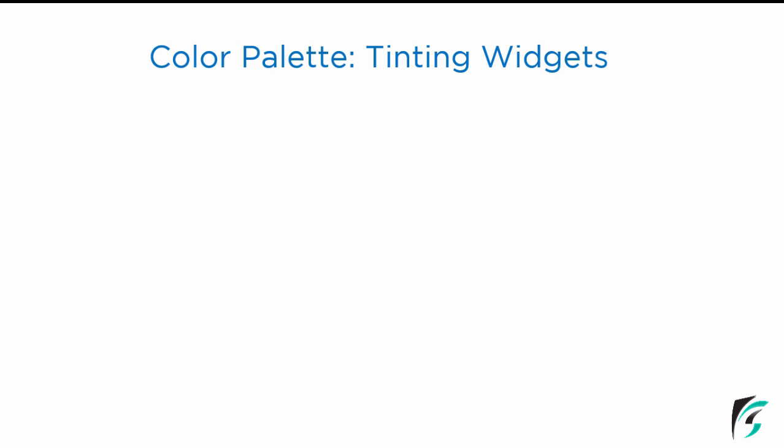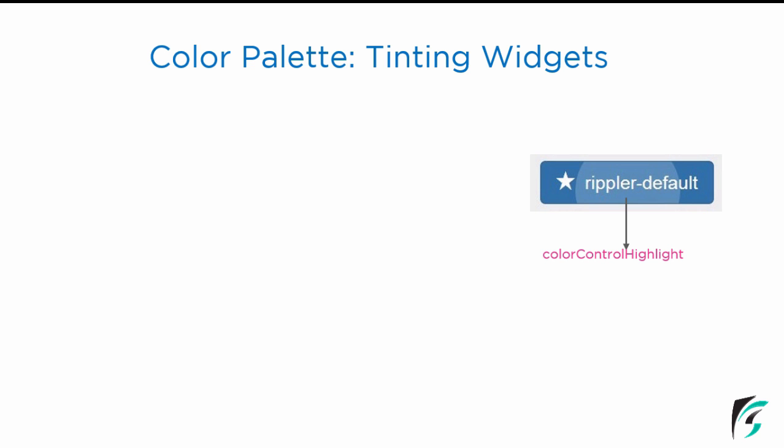After this comes the window background, which is controlled by the attribute windowBackground. One of the most exciting features of Android Material Design is providing various color tints to our widgets. We can see on the right side there is a button. On clicking the button, we see a ripple effect. The color of this ripple effect is the colorAccent by default. If we need to customize the ripple effect, we need to use the attribute colorControlHighlight. This attribute can be used to change the ripple color that appears in various widgets — not only the button, but all other widgets where the ripple effect is visible.